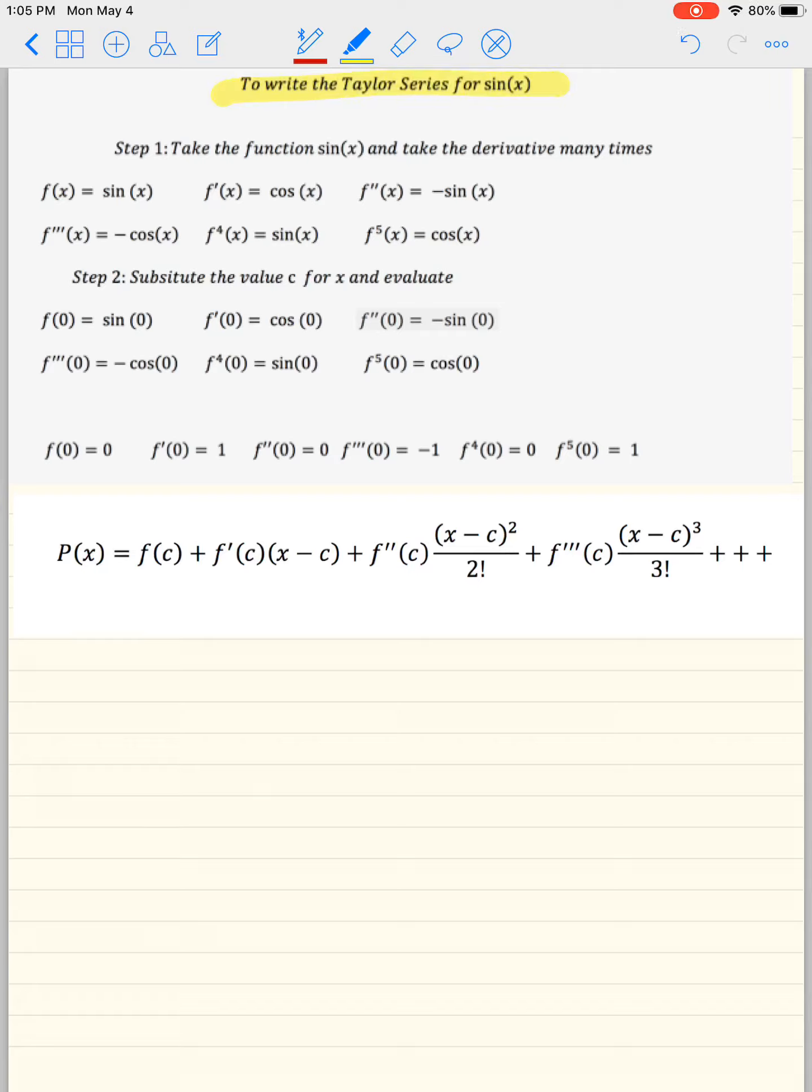It's the same exact rules. We're going to take the function sine of x and take the derivative many times. f(x) will be sine x, the derivative of sine is cosine x, and the derivative of cosine x is negative sine x. So you've got to make sure you know those first.